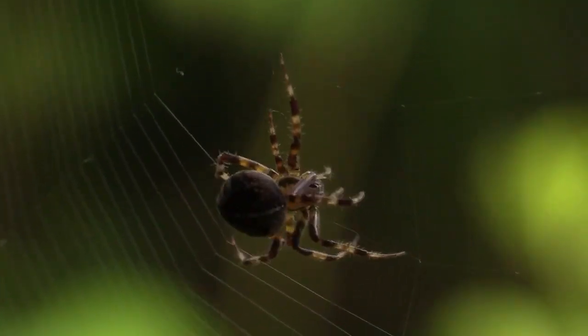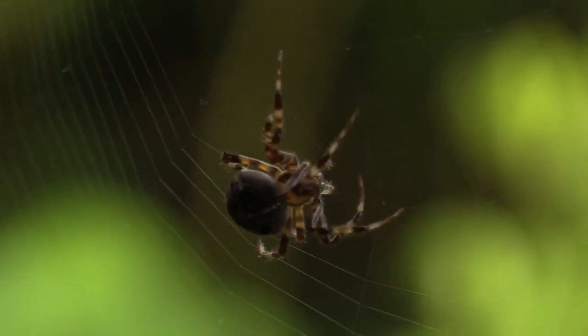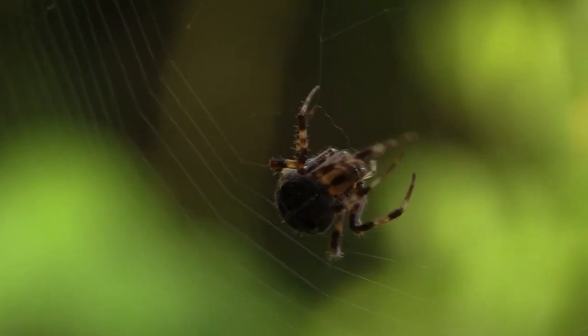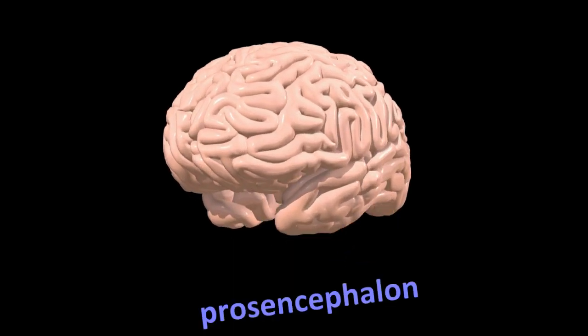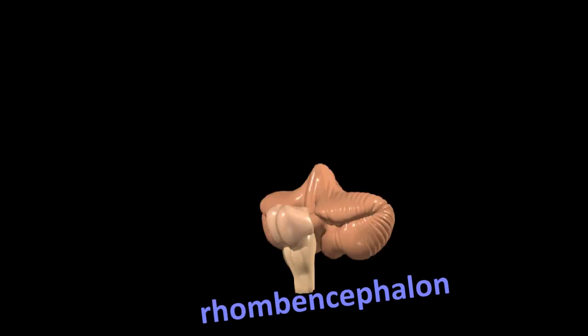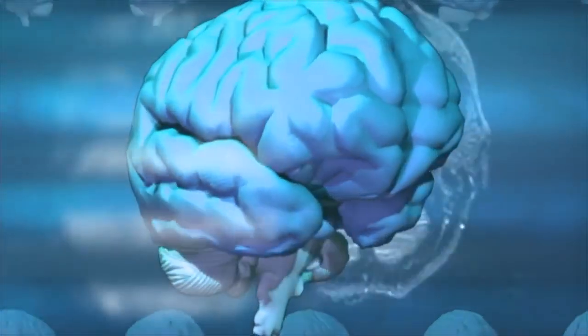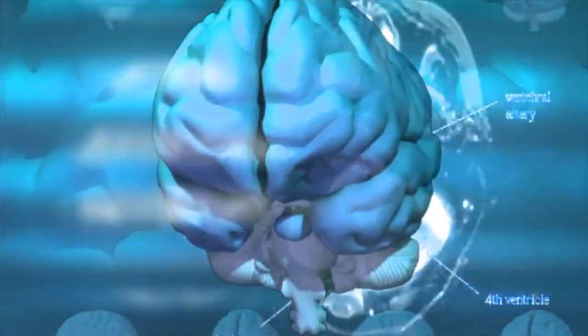Because our brain thinks differently, or we are programmed differently. Our brain in broad sense can be divided into three parts: prosencephalon, mesencephalon, and rhombencephalon. Prosencephalon, or the forebrain, plays main role in information processing related to complex cognitive activities.